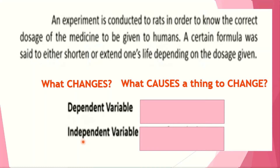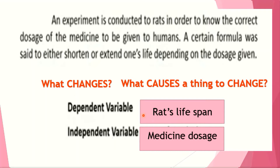So what do you think is the dependent variable here? Yes, you're correct — it's the rat's lifespan. And what affects the lifespan is the medicine dosage — that's the independent variable.